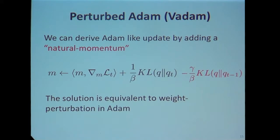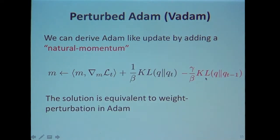Usually Adam works much better in practice — can we derive Adam using the same framework? We take this mirror descent update (natural gradient descent) and add a momentum term defined using KL divergence — same as standard momentum but with a different distance. If you write the closed-form solution for mirror descent, make the Hessian approximation, and do some mathematical manipulation, you get an algorithm just like Adam but where you perturb the weights.